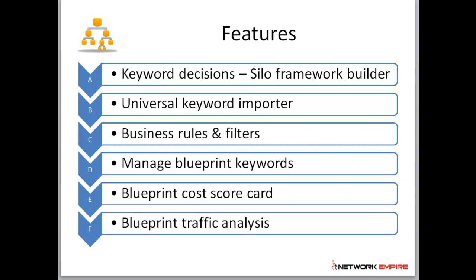The key features of the keyword decision screen are: the silo builder, where you can rapidly map out structured sites within minutes; the universal keyword importer; business rules and filters; managed blueprint keywords; the business cost scorecard; and the business traffic analysis. This is a very powerful module, especially when it comes to analyzing keywords from a profitability point of view. In the next videos we'll go through each core component on its own and break it all down.